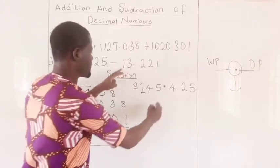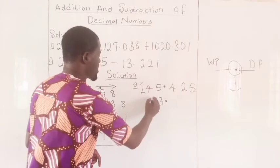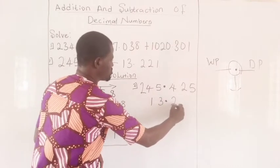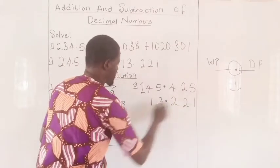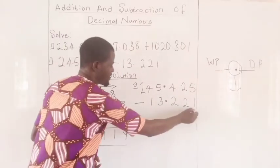Then, the second set of numbers, we have three, the decimal point first, and one. Then, after the decimal point, we have two, two, one. Now, since this is subtraction, you introduce your sign. You rule.